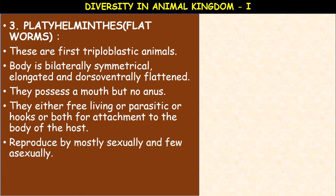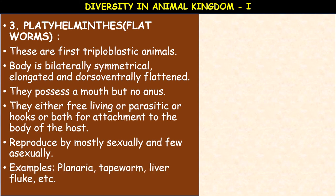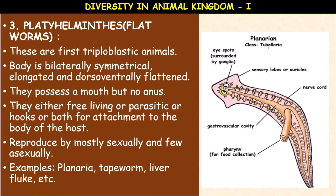They reproduce mostly by sexual reproduction and few asexually. Examples of platyhelminthes: Planaria, tapeworm, liver fluke, etc. Planaria belongs to the class Turbellaria — a typical example of this flatworm. It possesses sensory lobes or auricles, a nerve cord, and a gastrovascular cavity. In parasites, the digestive system is poorly developed. Eye spots surrounded by nerve ganglia are present; a true brain is absent.